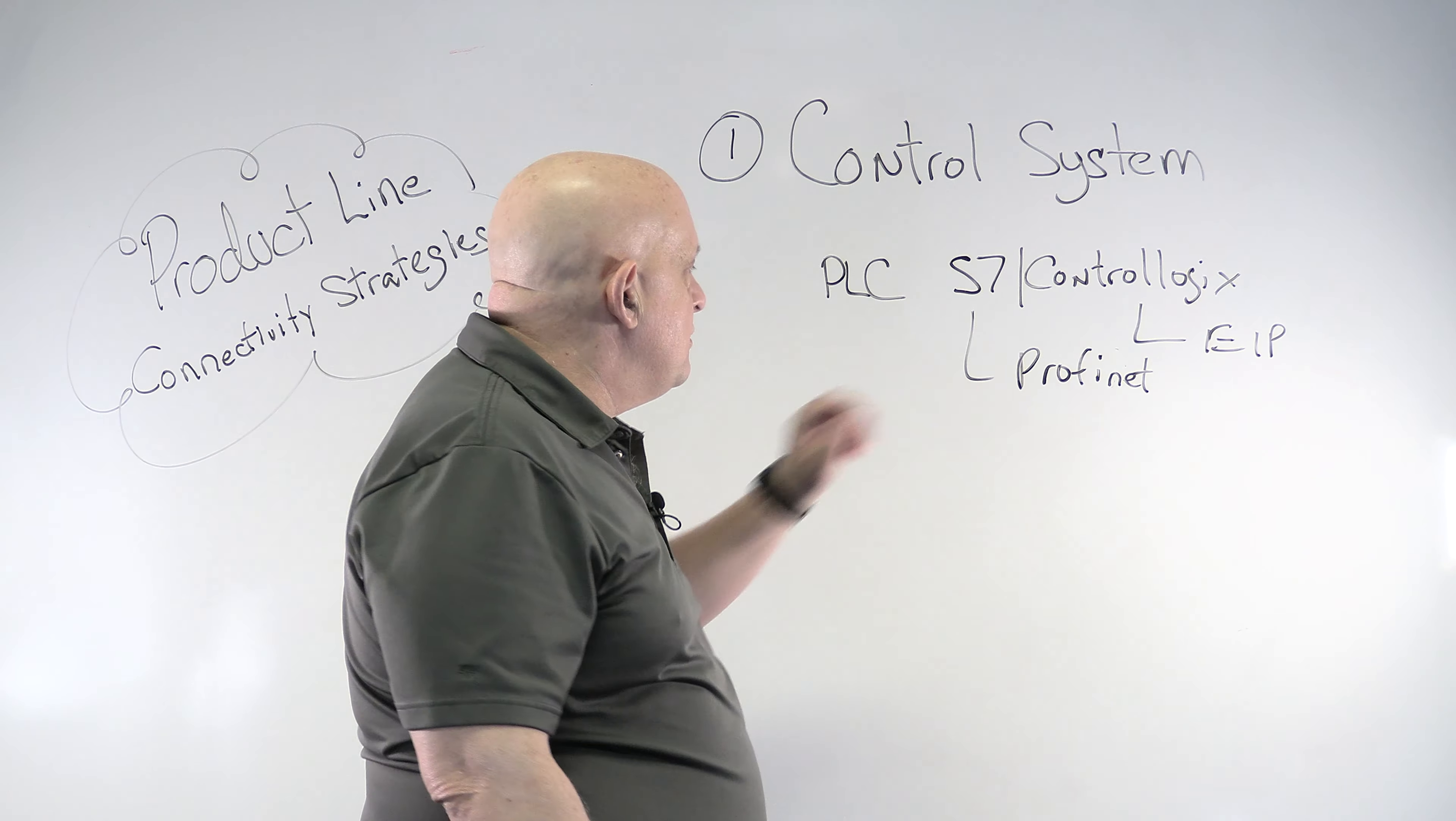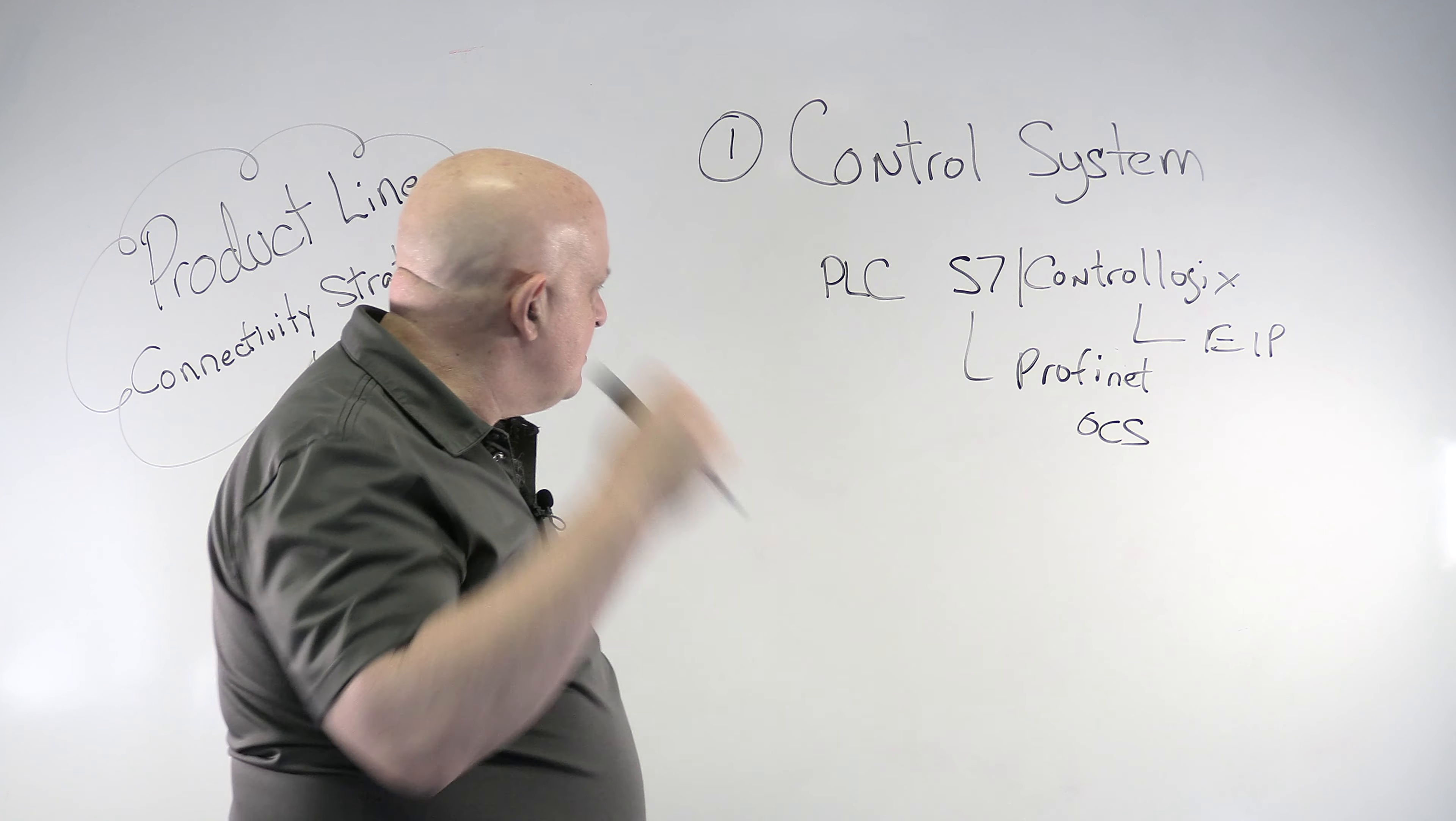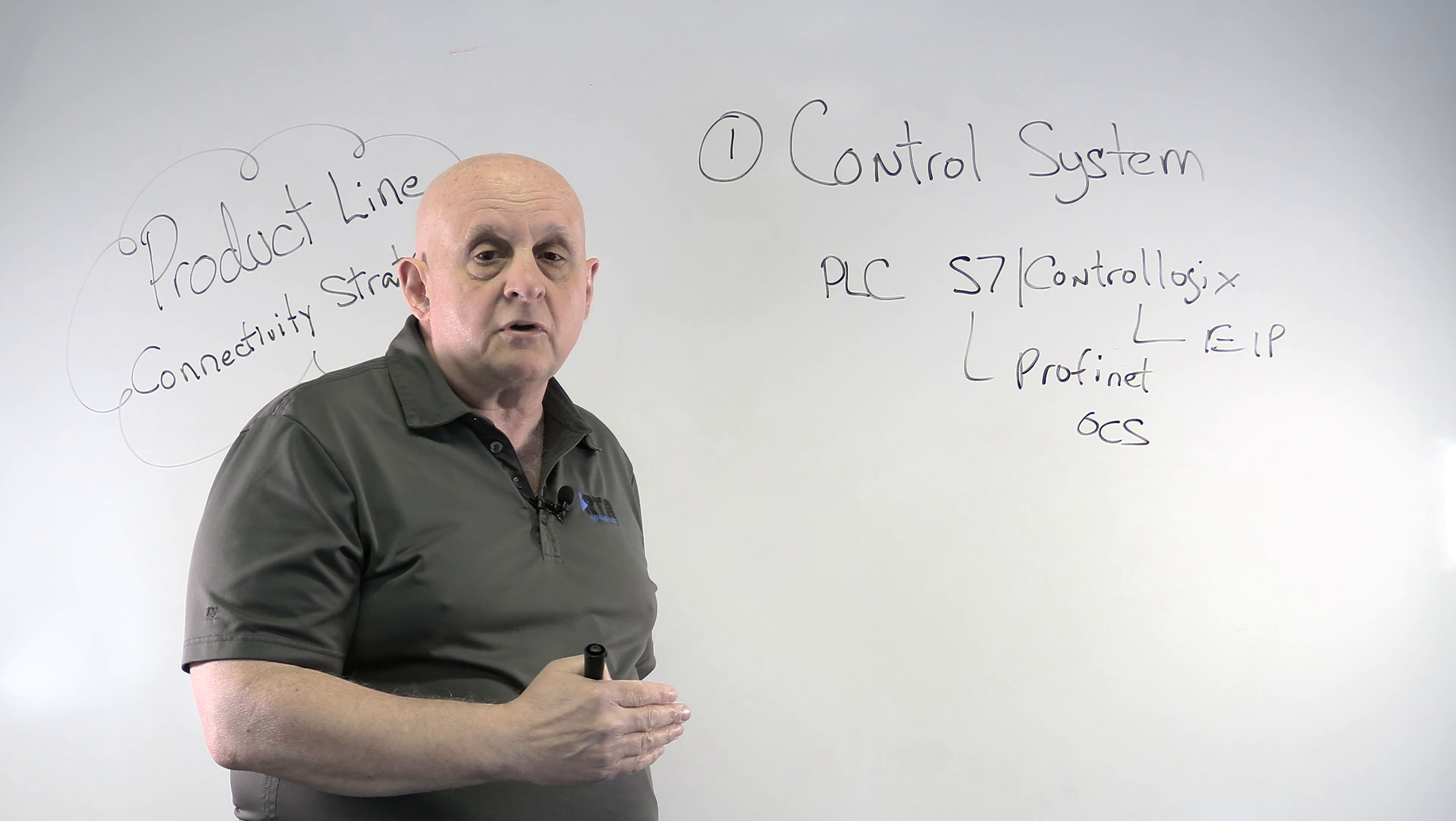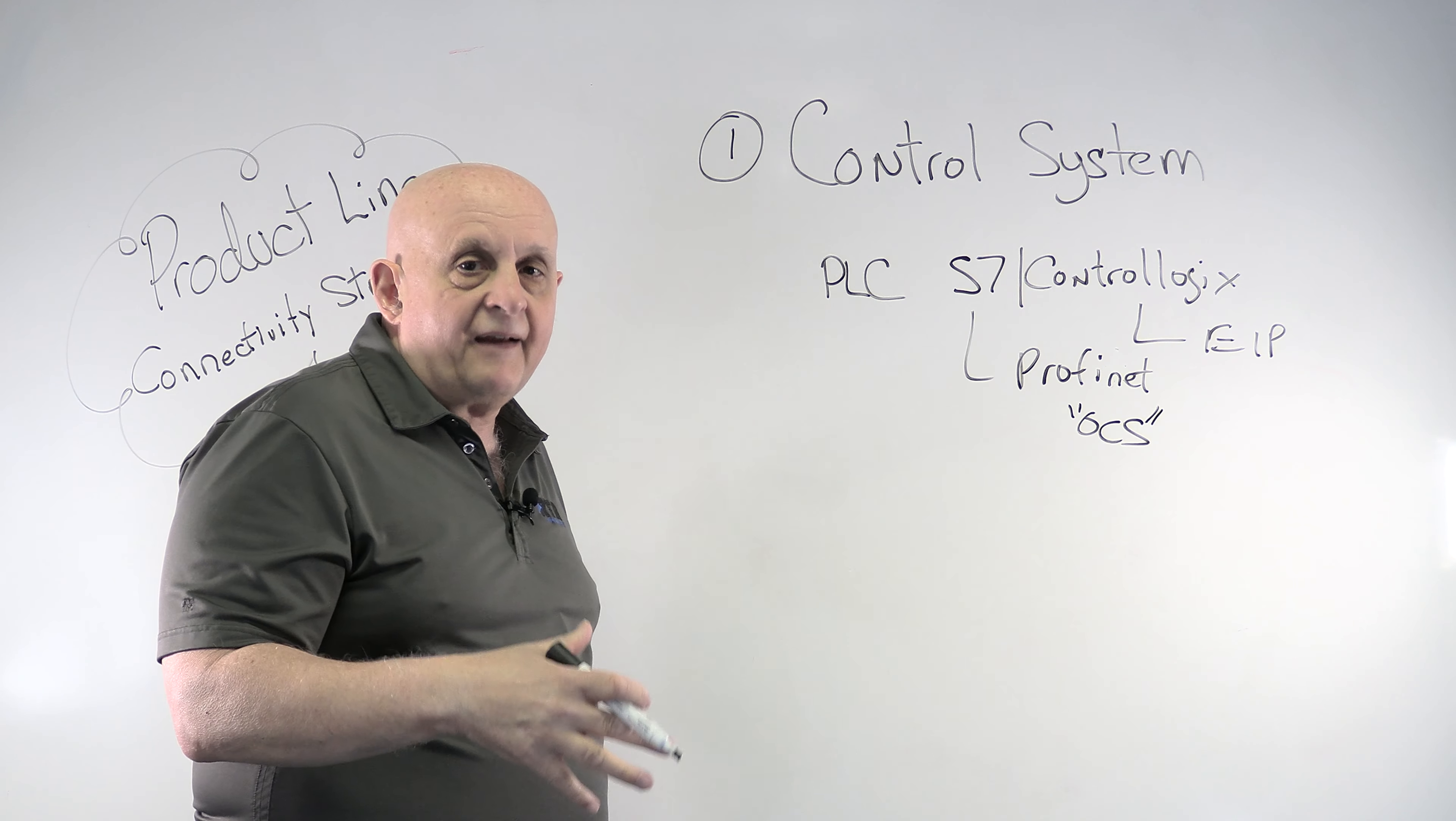The interesting thing about Profinet now is there's something called the OCS. The OCS is the open controller system. I believe it's called open community software. Essentially Siemens put all of its Profinet in the public domain. So now it's going to be a lot easier to get Profinet deployed on lots more machines.